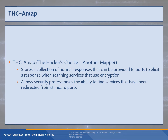THC Amap (The Hacker's Choice Another Mapper) stores a collection of normal responses that can be provided to ports to elicit responses when a scanning service uses encryption — a slightly more advanced version of the kinds of responses we'd craft using hping. This gives us the ability to find services that have been redirected from standard ports. For example, with port forwarding active — as services like Battle.net or certain streaming services require — you can have direct access to a data stream without leaving an open compromised channel through port 80 or 8080.